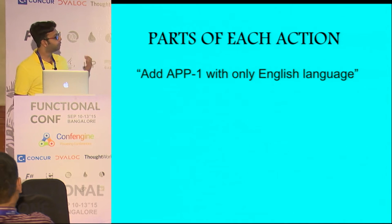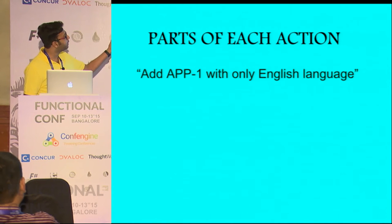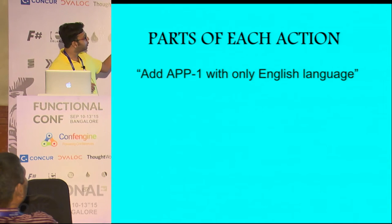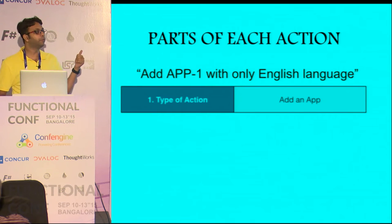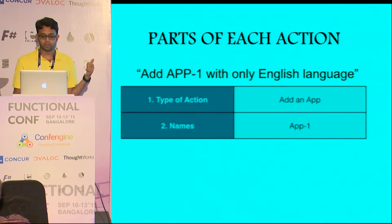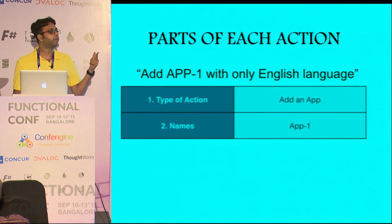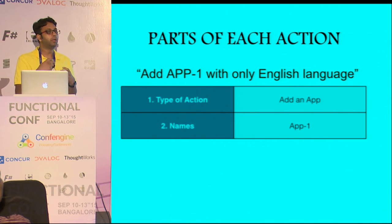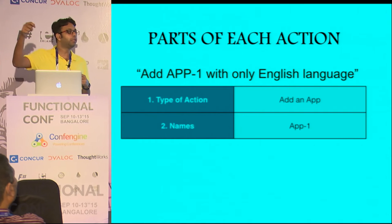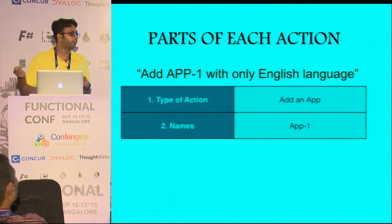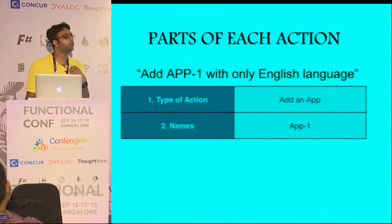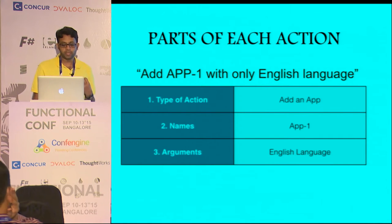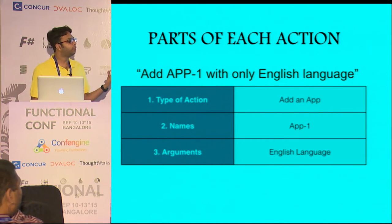So what are the parts of each action? Say for example, this is an action: I would like to add app 1 with only English language. First, there is a type of action — adding an app. Then there is a certain name that I am referring to, app 1. But app 1 is something I'm referring to; internally it will be created with some ID like 1, 2, 3, 4, 5 — a runtime value that I don't know. So I'm referring to it in a way I can understand in my test. Then there is an argument — I would like to have only English language in this app, maybe Spanish, maybe Hindi.